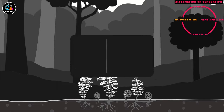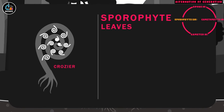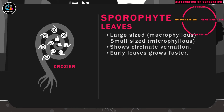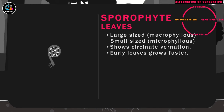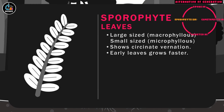Pteridophytes can be categorized on the basis of their leaf size. The species having large-sized leaves are called macrophylls, and the ones having small-sized leaves are referred to as microphylls. The leaf shows a special type of development called circinate vernation and appears like a crozier during initial stages.